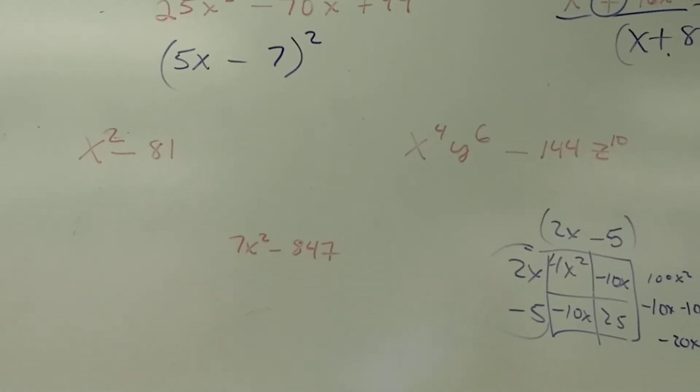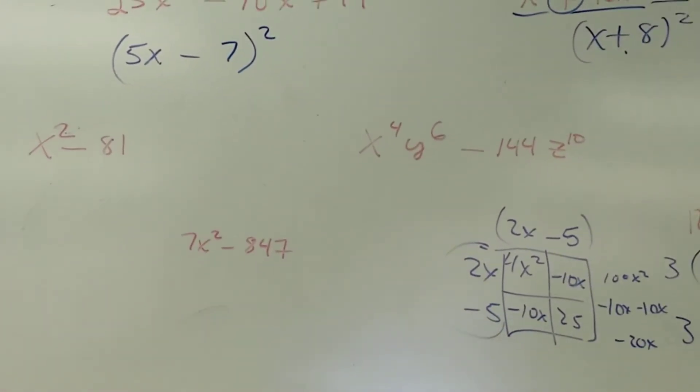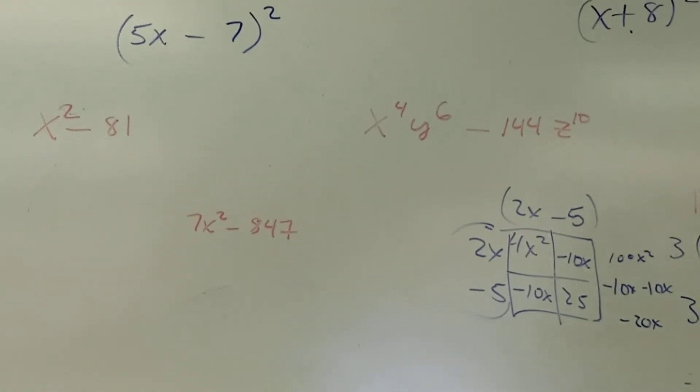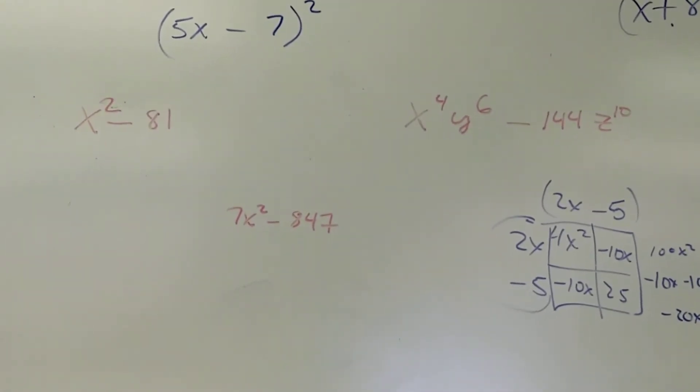But it will factor if it's a difference, meaning there's a subtraction sign between them, of perfect squares. Notice every one of these has a what between them? Every one of them has a negative between them. Every one of these three. Let's do this one first. It's the easy one.